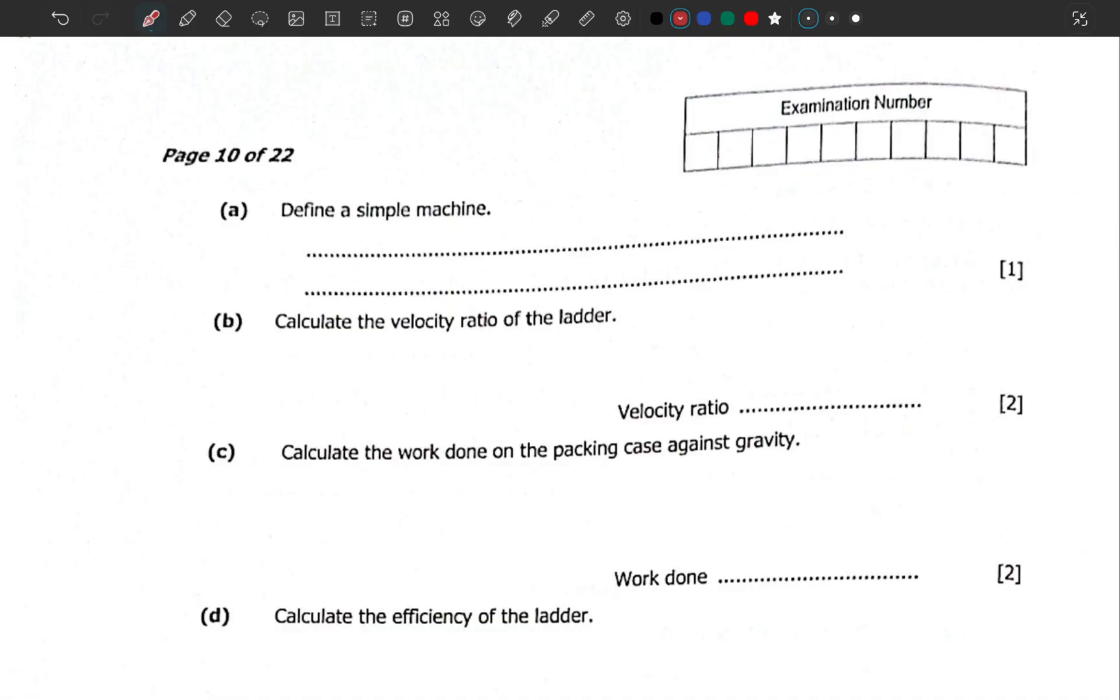There are different definitions, but a simple machine is a mechanical device. Don't just say it's a device. It is a mechanical device that makes work easier by changing the magnitude or direction of the applied force.